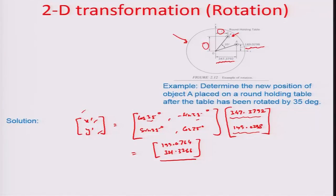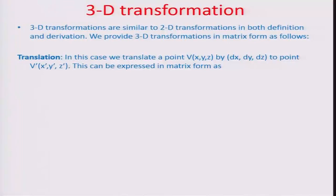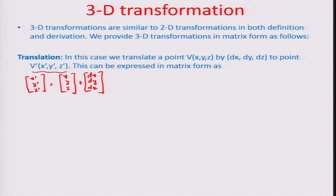We can extend all this to 3D space — going from shapes into forms. When talking about three-dimensional forms, it is important to add a coordinate axis. In 3D, the translation equation is represented as the column vector [x-dash, y-dash, z-dash] = [x, y, z] + [dx, dy, dz], where the distance vector has three components along all three directions.